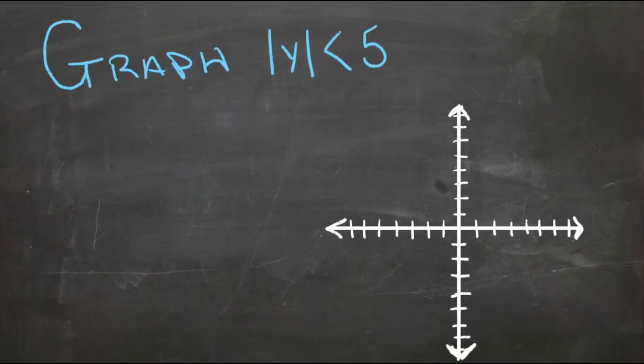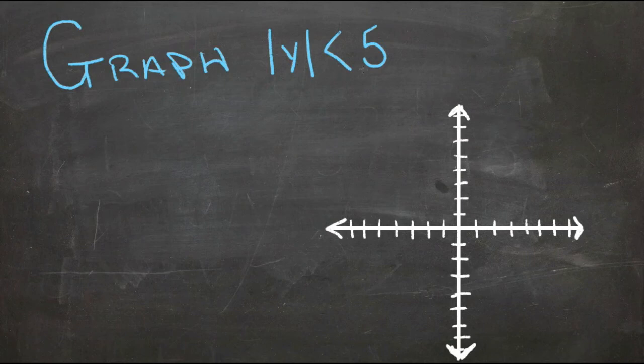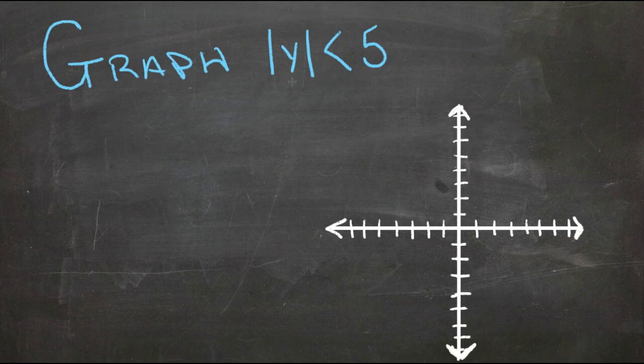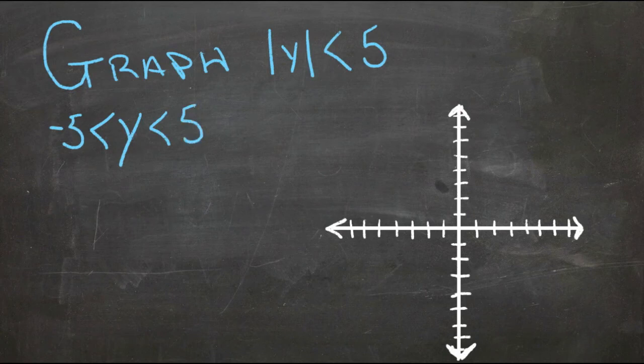To graph this inequality, we have the absolute value of y is less than five, which means that either y needs to be less than positive five, or greater than—which is less negative than—negative five. So it tells us that y needs to be between negative five and positive five.